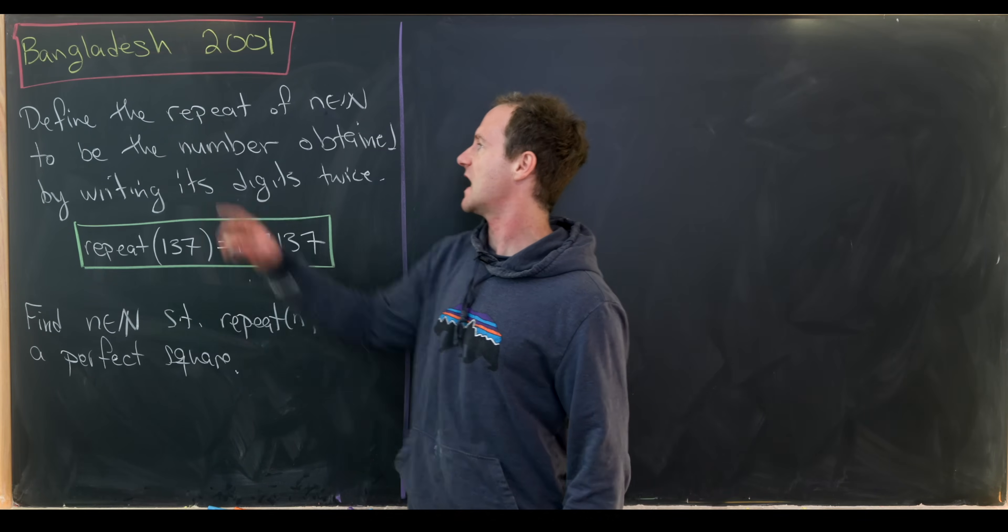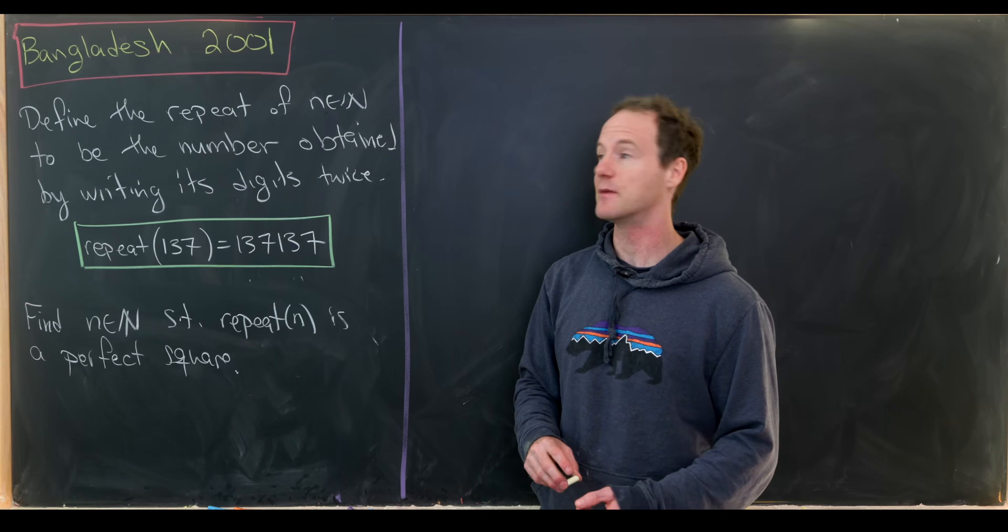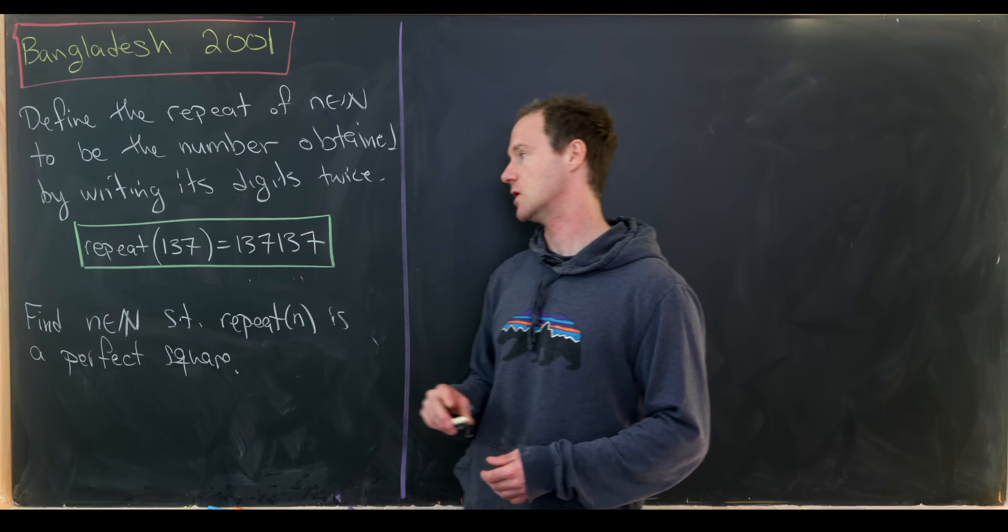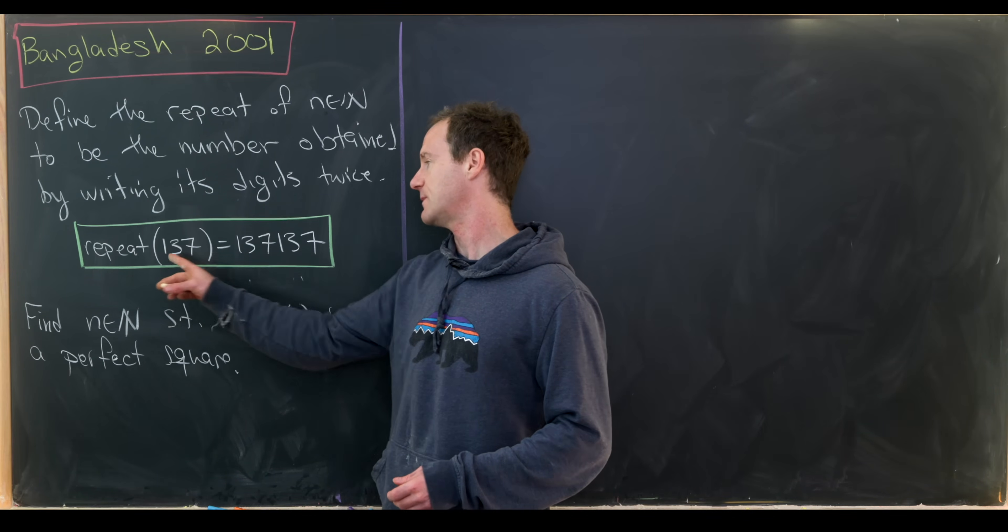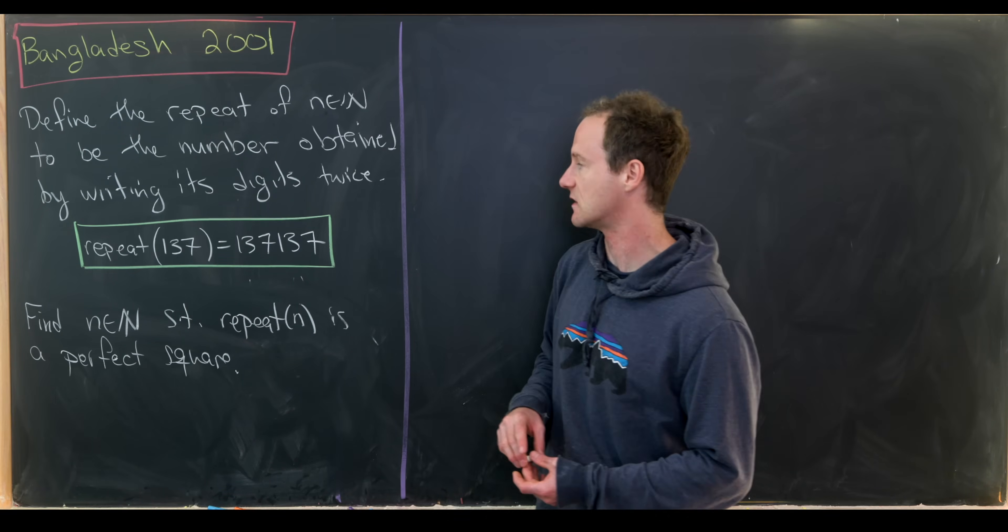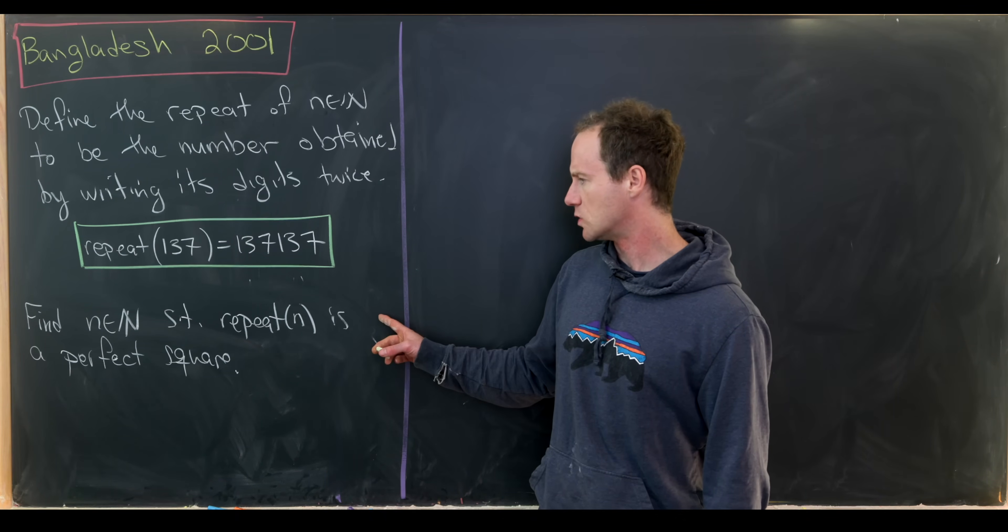We want to define something called the repeat of a natural number to be the number that we obtain by writing the digits of this number two times in a row. So for example, the repeat of 137 would be 137,137.